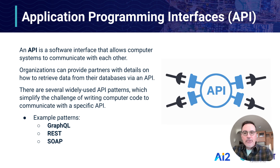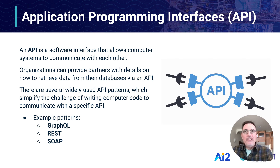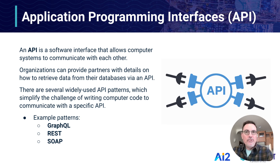This is where APIs, or application programming interfaces, come into play. An API is really just a software interface that allows computer systems to talk to each other — that's really all it is. In order for that to happen, programmers do have to do some work, so that an organization making an API available can share information with partners about what they'll need to do to write code to communicate with that API.